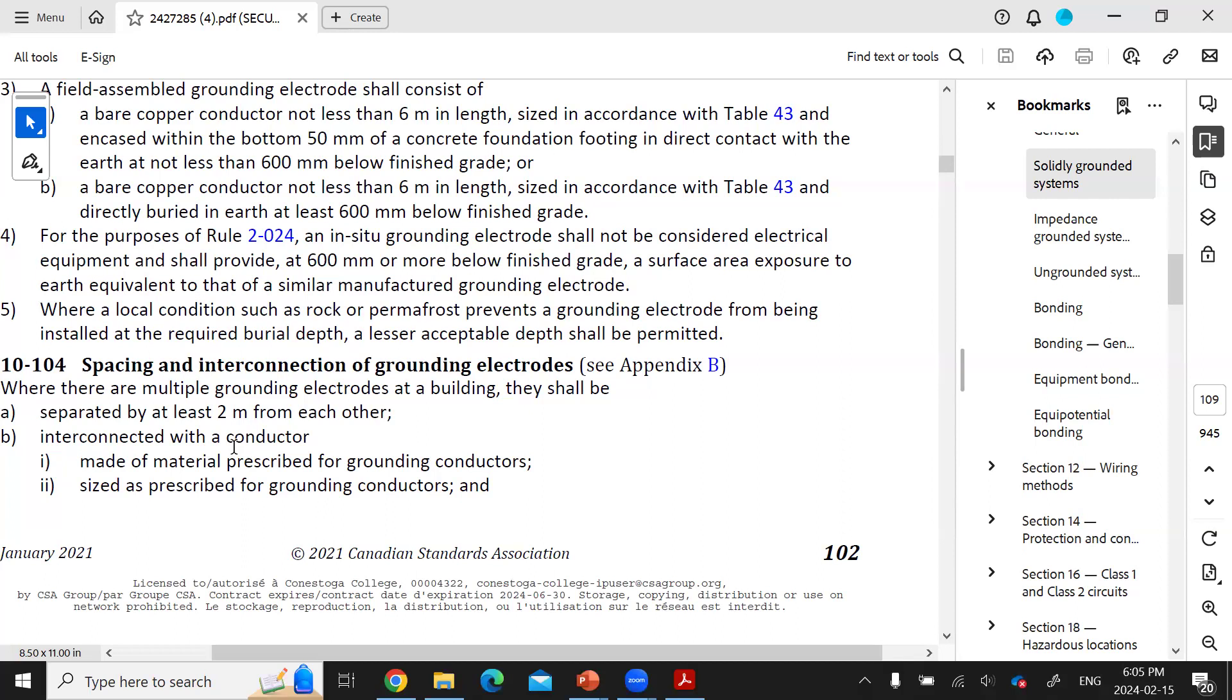If you make those electrodes closer than two meters from one another, there's not going to be enough Earth between those electrodes to provide a low resistance connection to Earth for each rod. And the electrical potential would not fully be discharged into the Earth.